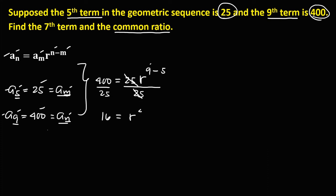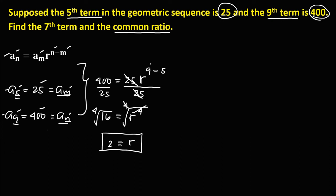To solve for r, since the exponent of r is 4, we need to take the fourth root on both sides. So therefore, r is equal to the fourth root of 16, that's 2. So the common ratio is equal to 2.